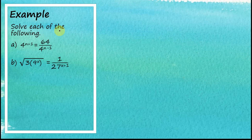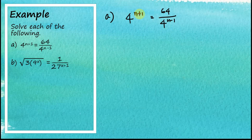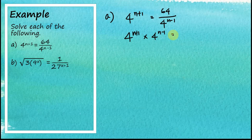Let's look at another example. For part a: 4 to the power of n plus 1 equals 64 divided by 4 to the power of n minus 1. We rearrange by multiplying both sides by 4 to the power of n minus 1, giving 4 to the power of n plus 1 times 4 to the power of n minus 1 equals 64.